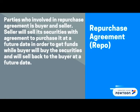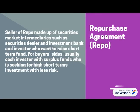The parties involved in a repurchase agreement are the buyer and seller. The seller will sell its securities with an agreement to purchase them back at a future date in order to obtain funds, while the buyer will buy the securities and sell them back to the seller at a future date. Traditionally, sellers in repo are made up of securities market intermediaries such as securities dealers and investment banks, and investors who want to raise short-term funds. For buyers, they are usually cash investors with surplus funds seeking high short-term investments with less risk.